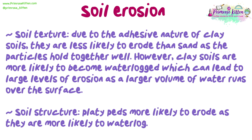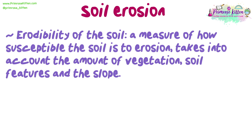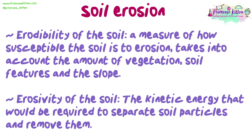Soil structure: platypeds are more likely to erode as they are more likely to waterlog. Erodibility of the soil is a measure of how susceptible the soil is to erosion, and takes into account the amount of vegetation, soil features, and the slope. Erosivity of the soil refers to the kinetic energy that would be required to separate soil particles and remove them.